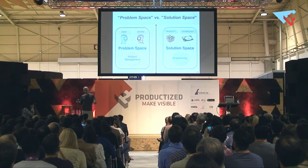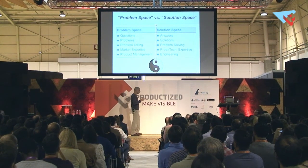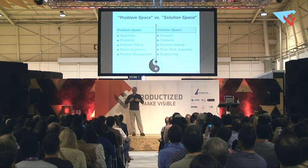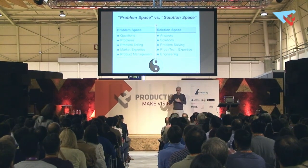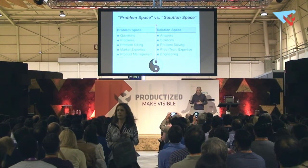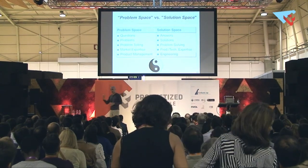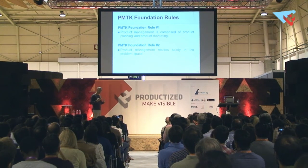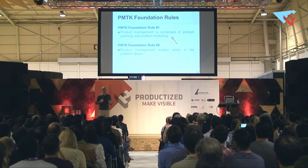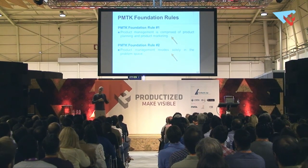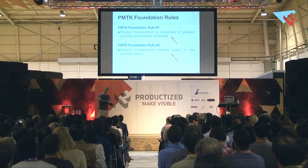Engineering — which we can also refer to as product development — is in the solution space. This table divides the problem space and solution space: we have questions and answers, problems and solutions, market understanding and market solving, market expertise and product and technical expertise. This is essentially the difference between product management and product development — two sides of the coin. Product management is comprised of two disciplines only: product planning and product marketing. It resides in the problem space and does not reside with the product developers in the solution space.